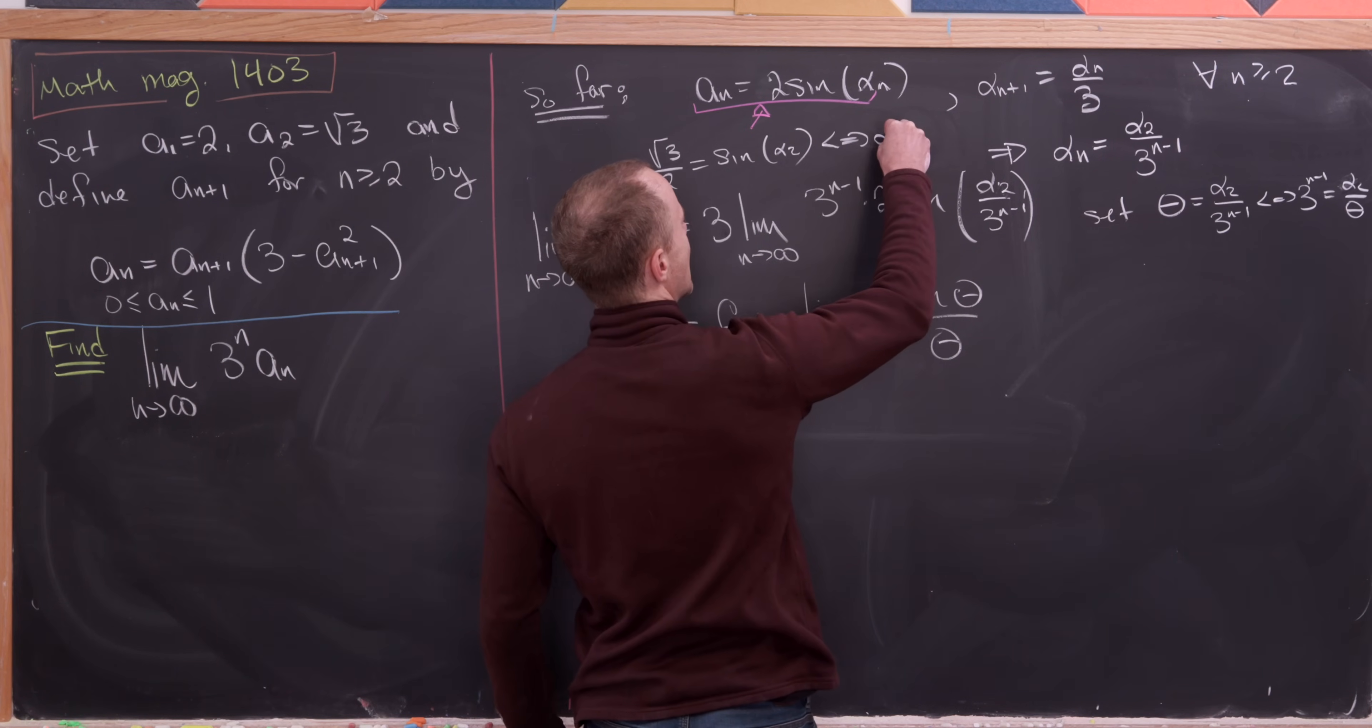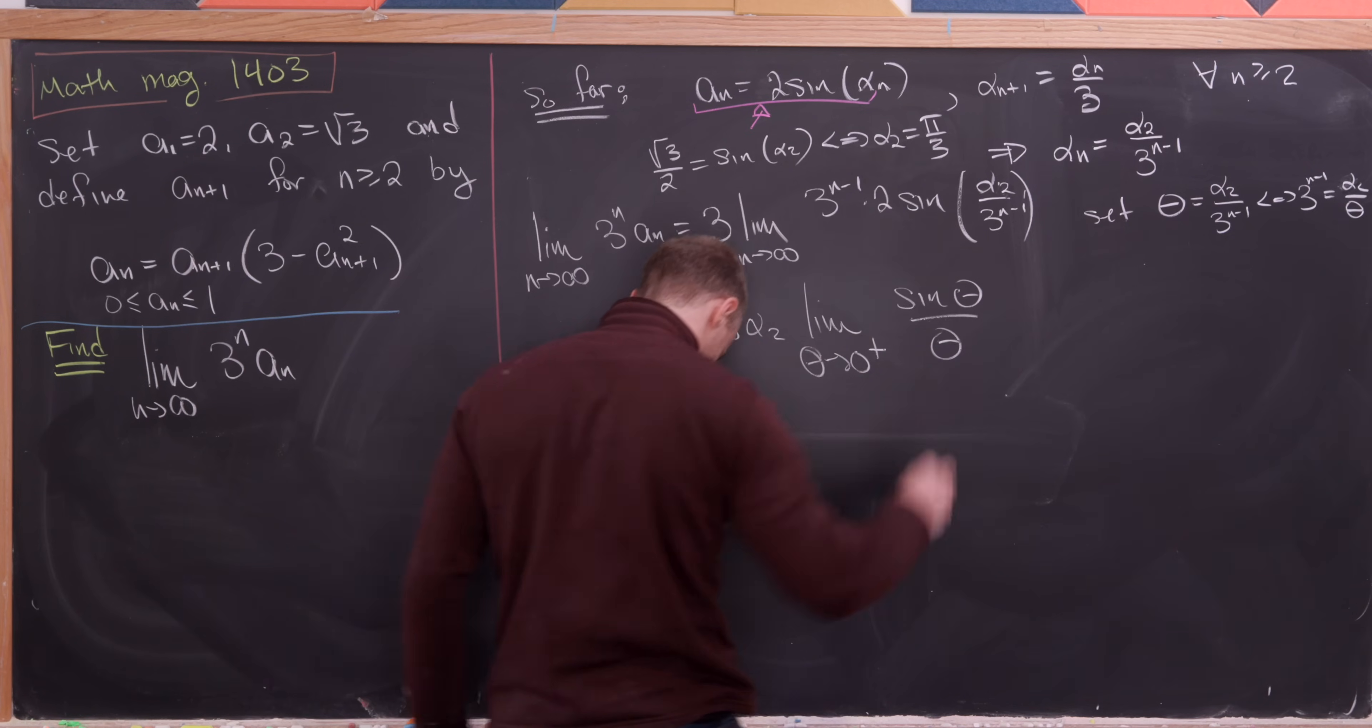But then which value of alpha 2 will give us sine alpha 2 equals root 3 over 2? Well, that is pi over 3. So that means we have alpha 2 is equal to pi thirds.